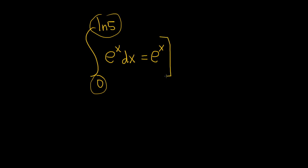We write our little bracket, and the 0 goes on the bottom and the ln5 goes up top. This notation means that you take the number up top and you plug it in for your x.